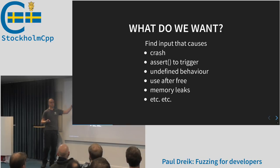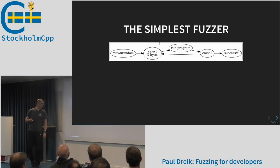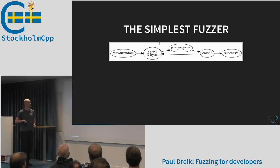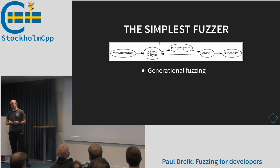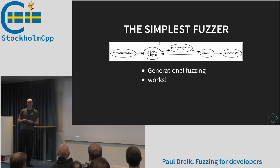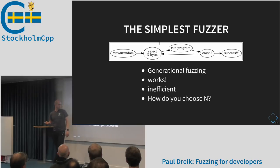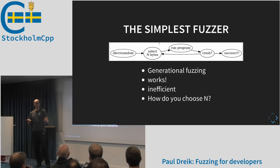The big question is how do we find these inputs? Here's a basic attempt: we have a random source, pick N bytes of randomness, feed it to the program, see if it crashes. If it crashes, great — that's what we wanted. If not, repeat. This is called generational fuzzing because we generate the input from scratch. It works, but it's horribly inefficient — picking an interesting 16-byte input at random has a very small chance. We also don't know how to choose N.